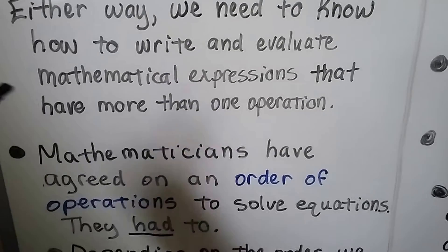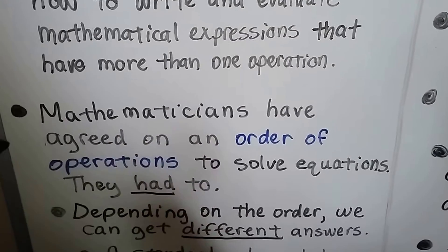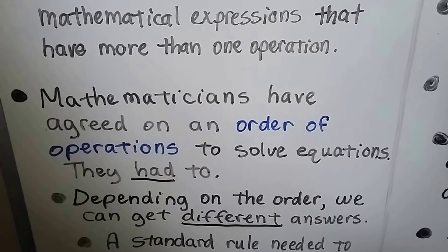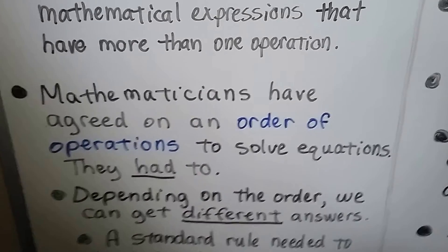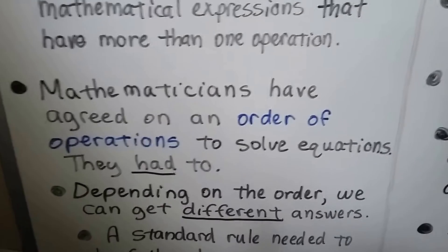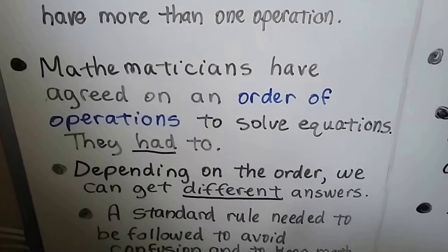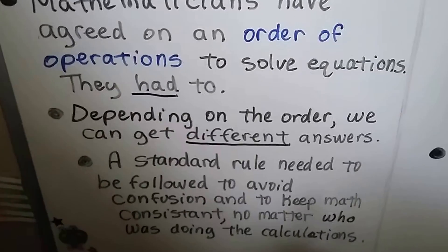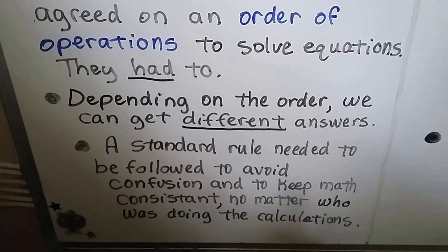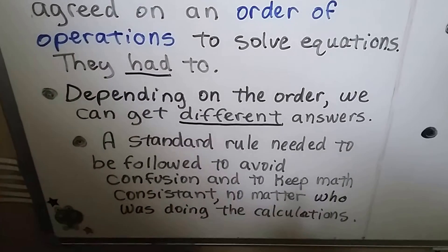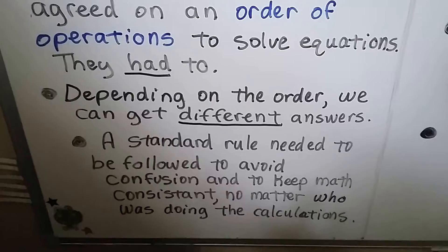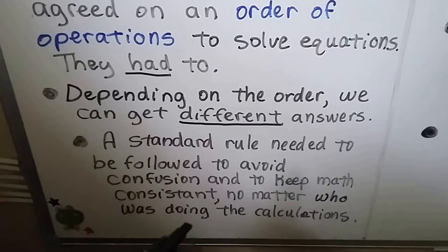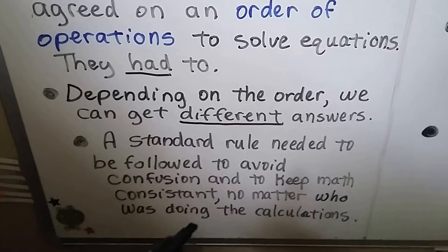Mathematicians have agreed on an order of operations to solve equations. They had to, because depending on the order we can get different answers. So a standard rule was needed to avoid confusion and keep math consistent no matter who was doing the calculations.